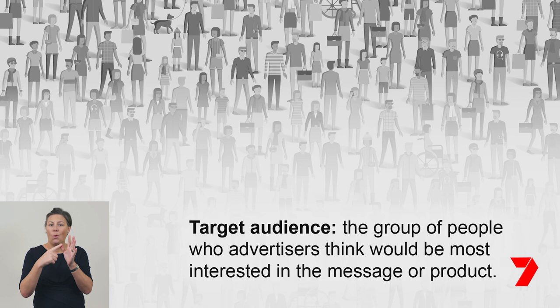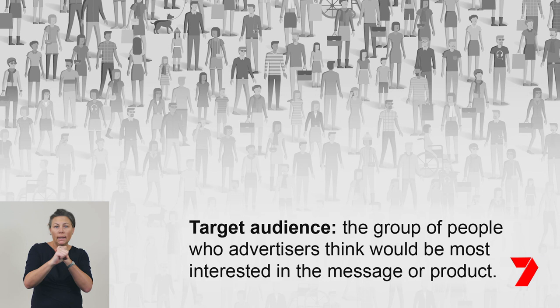Advertisers create different ads depending on their target audience. Car advertisements are mostly targeted at adults, same with products like vitamins or insurance. You might not pay much attention to those ads. However, ads for toys are targeted at people your age. What other products can you think of that are targeted at children? And you know that all of these ads will use different persuasive techniques and visual elements to suit the ad.